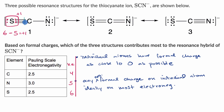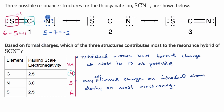For carbon in the first resonance structure, four outer electrons are hanging out — the same as expected for a neutral carbon atom — so four minus four gives zero formal charge. For nitrogen, we count seven outer electrons hanging out. Neutral nitrogen would have five valence electrons, so five minus seven is negative two. We have a negative two formal charge on nitrogen in this first resonance structure.